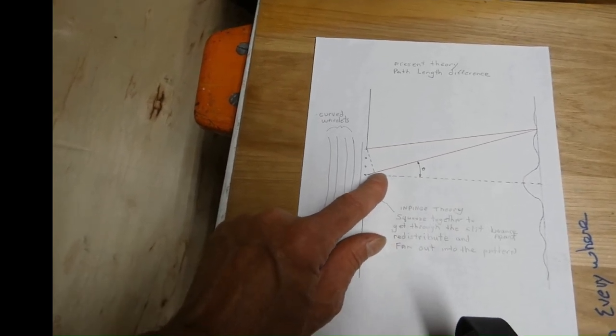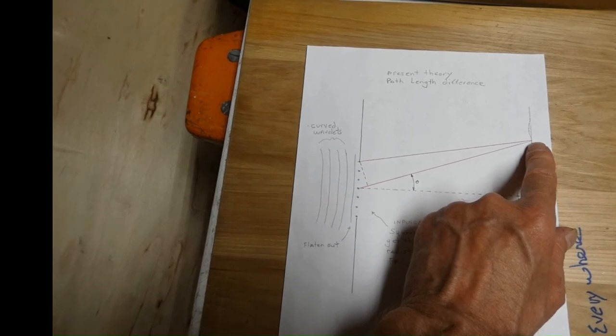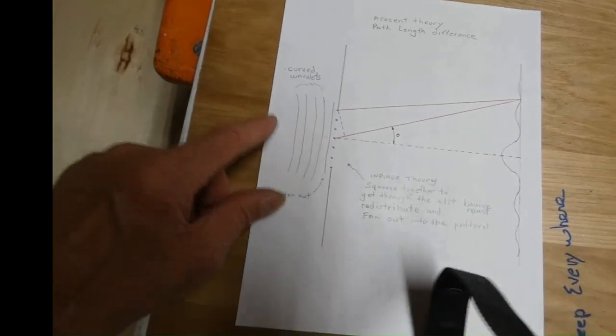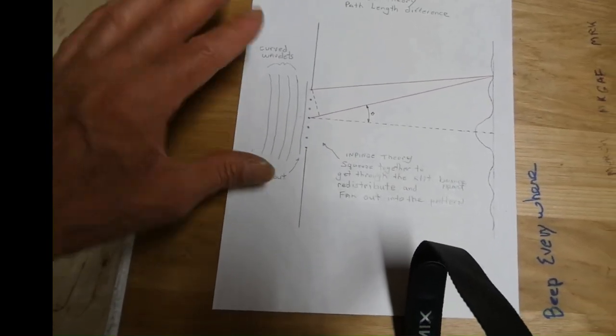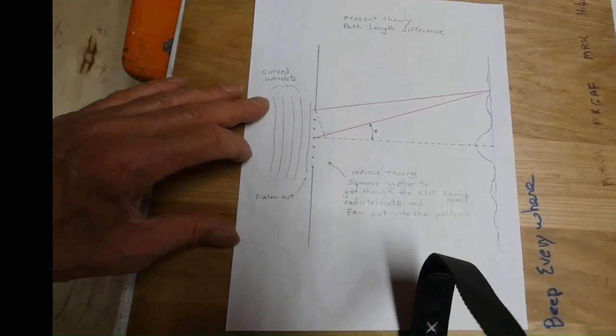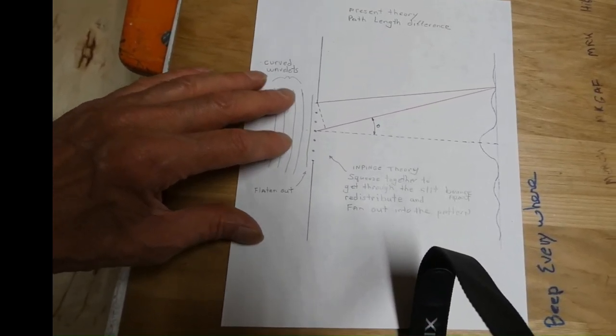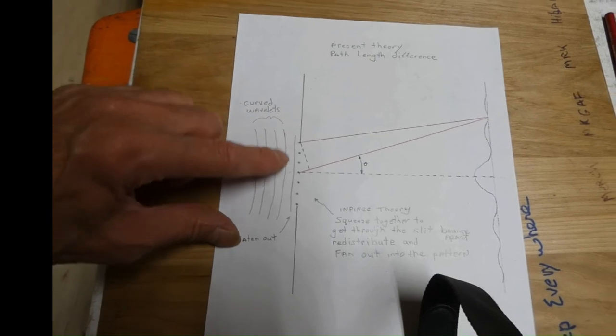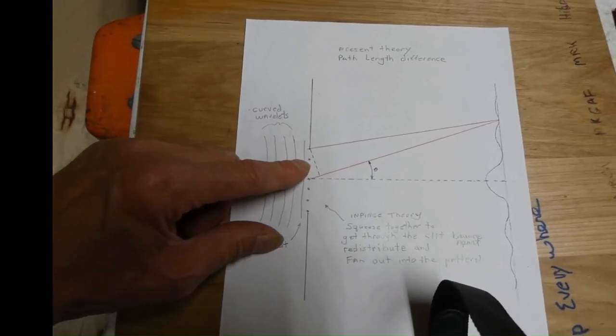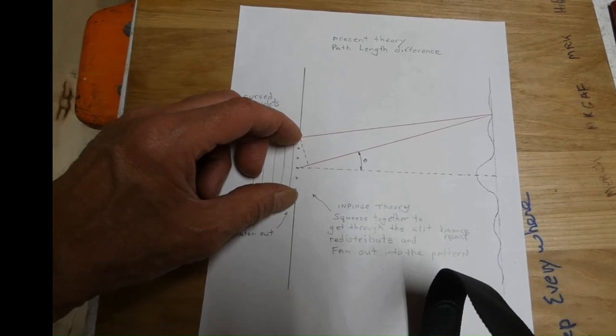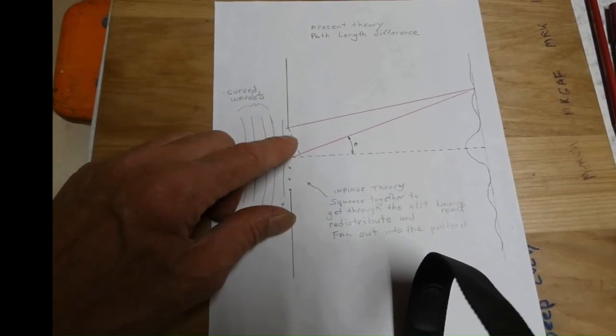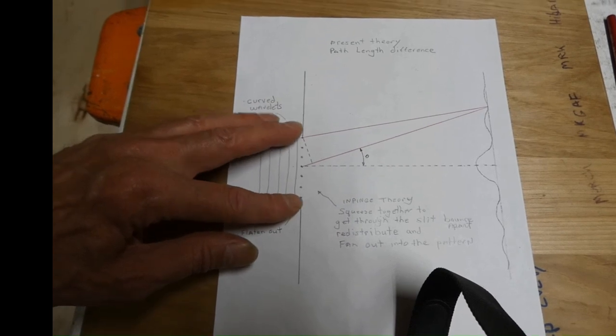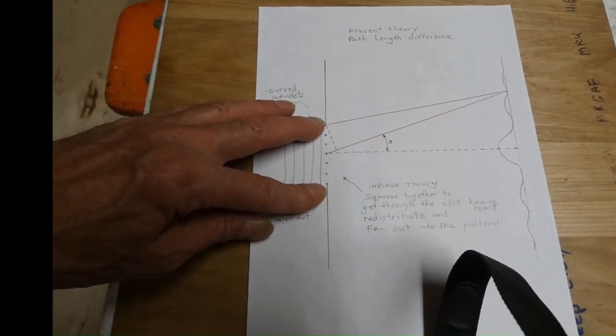Present theory explains the pattern by the path length difference. So when you measure the difference between one point to the other, if it's off by a half wave, it's destructive interference. And so the wavelets are coming in from this side and they're more or less curved and out, not totally lined up. When they hit the barrier, it flattens out. The last one flattens out. And they squeeze together and elastically bounce apart. And it's real, and they shoot out, redistribute and fan out into the pattern. That's this impinge theory I'm explaining.